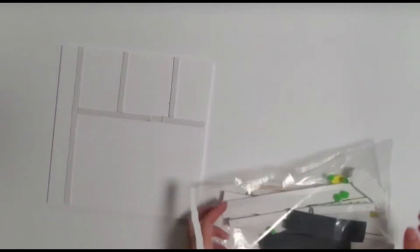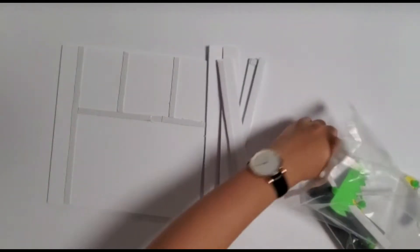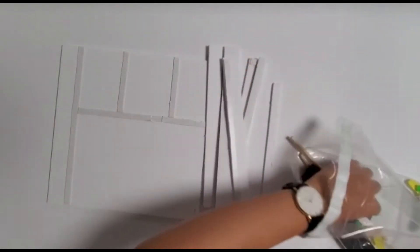We're going to start by assembling the bento box. Take out the A piece, the two B pieces, the two C pieces, one D piece, one E piece, and the two F pieces from your kit.